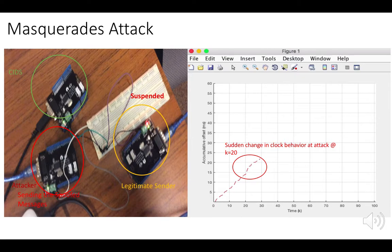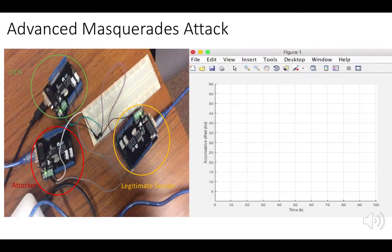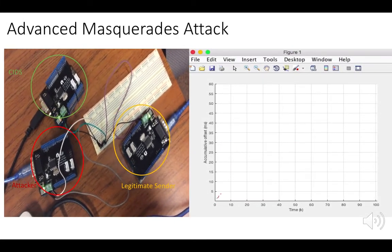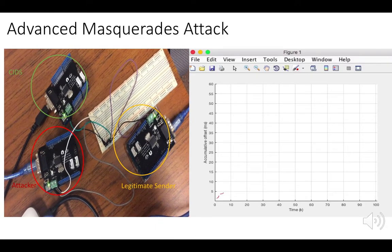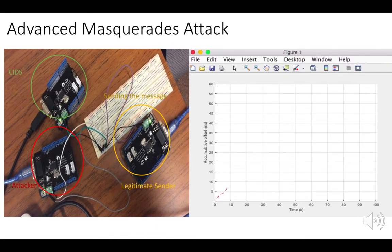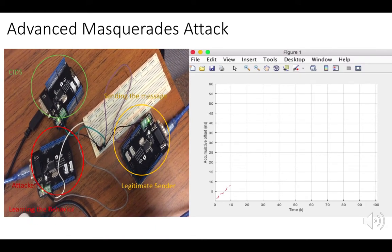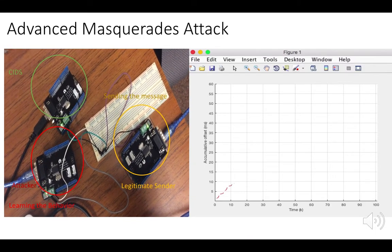In the case of Advanced Masquerade Attack, we are not going to see that sudden jump at K equals 20. We didn't change the network settings, using the same parameters. The legitimate sender is sending messages while also learning the clock behavior.